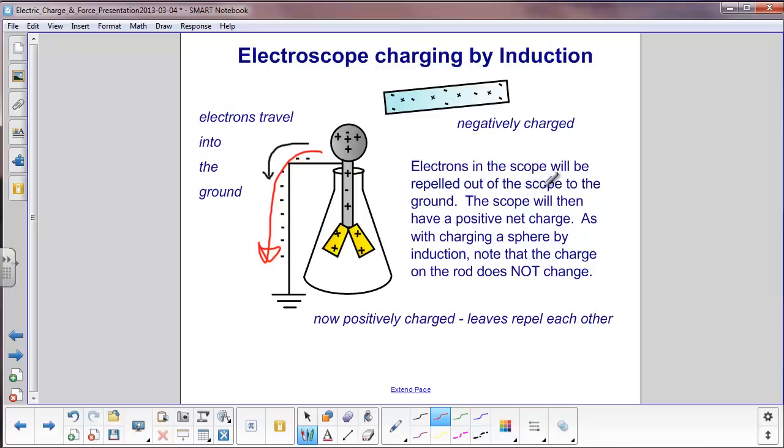Note, when we talked earlier about the spheres and charging by induction, the charge on the rod that charged them did not change. And again, the same case here. Whatever charge was here in the beginning is still what we have at the end. The reason this is now a positively charged electroscope is excess electrons went to ground.